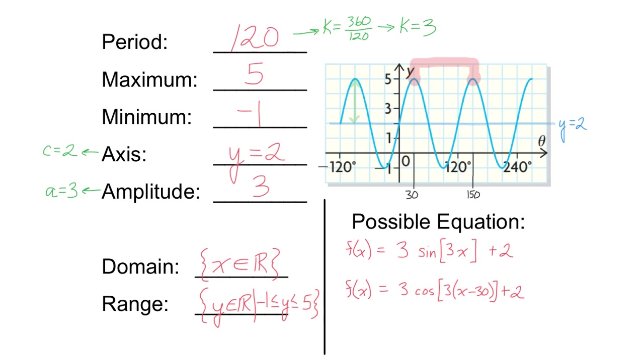If I use a cosine function as my parent function, well, I'll start at the maximum, shifted it to the right 30. So same amplitude, same k value, same central axis, but I've shifted to the right 30 units.